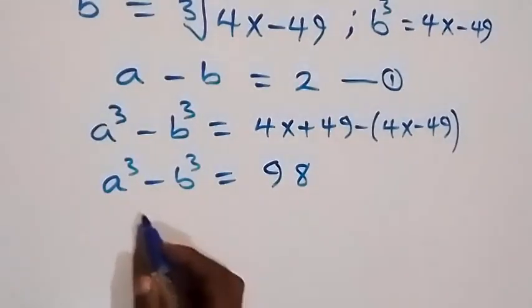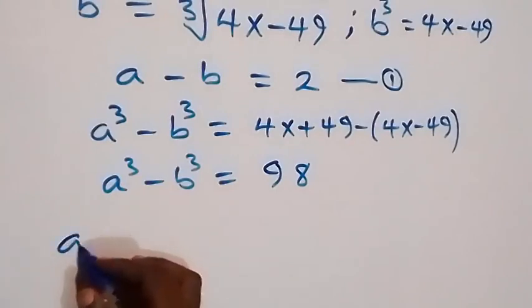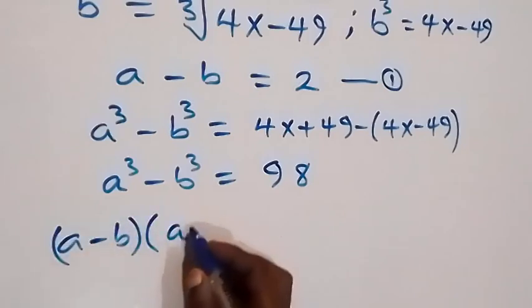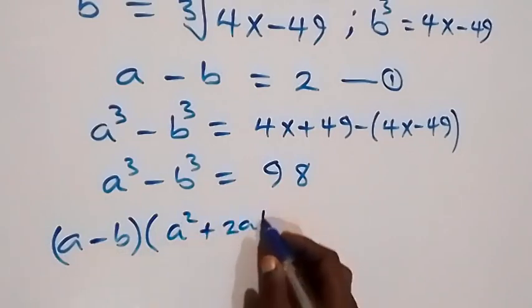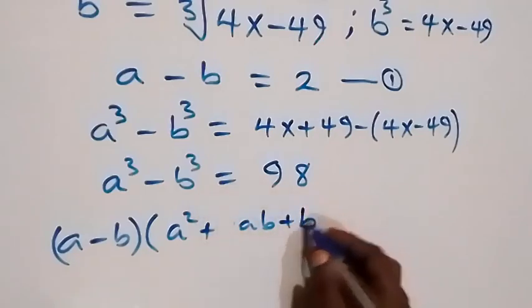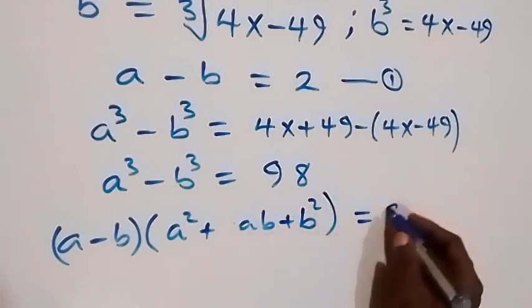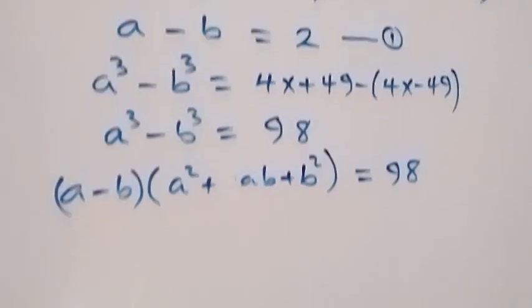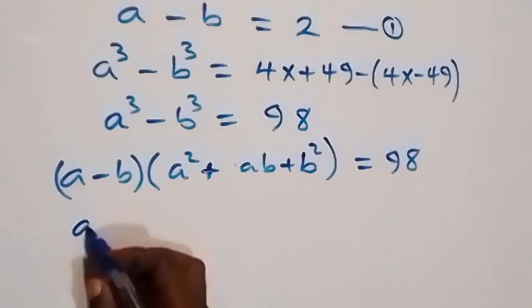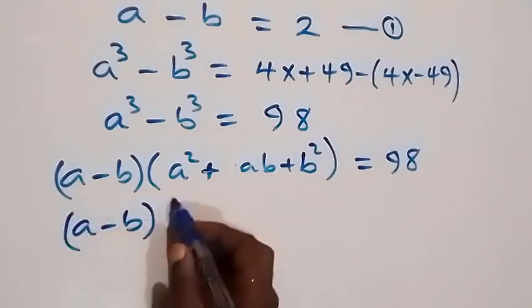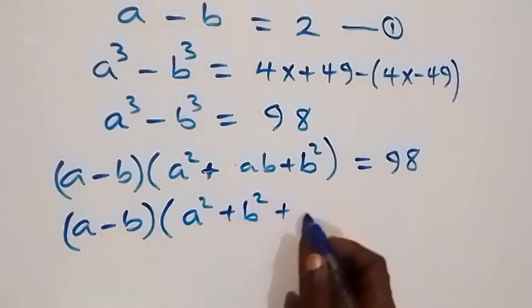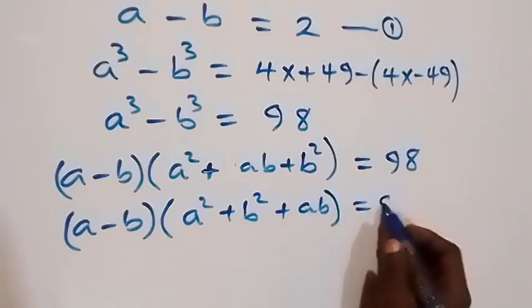From the identity for the difference of two cubes, we have A minus B, multiplied by the bracket A squared plus AB plus B squared, which equals 98.